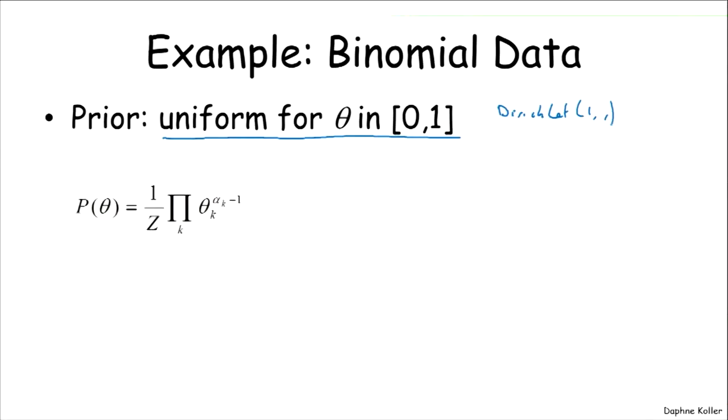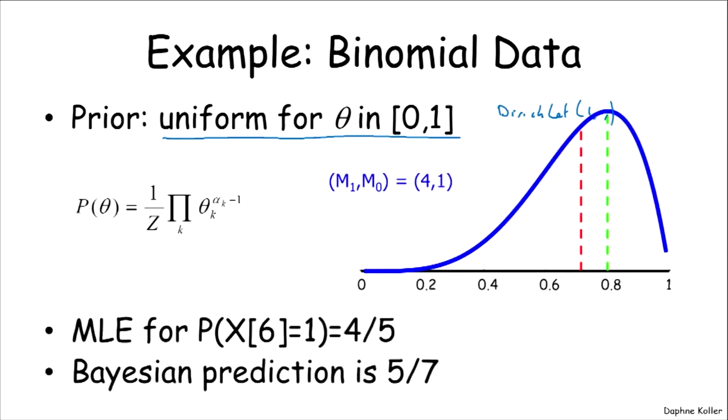So this is our Dirichlet. So this is a general purpose Dirichlet distribution. In this case, the hyperparameters are one one. And let's imagine that we get five data instances of which we have four ones and one zero. And if you actually think about the differences between what the Bayesian estimate gives you for the sixth next coin toss relative to maximum likelihood estimation versus the Bayesian estimation.